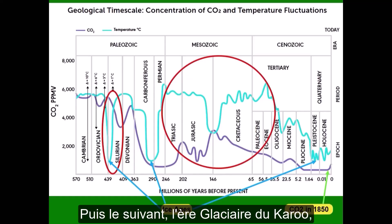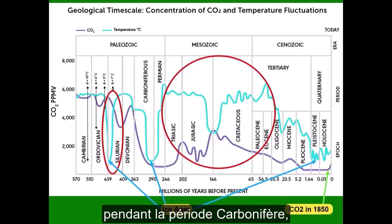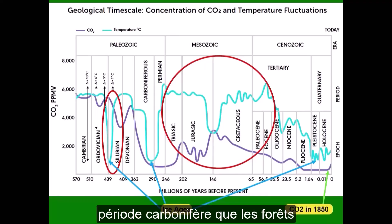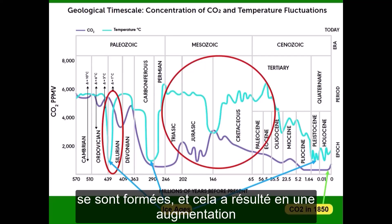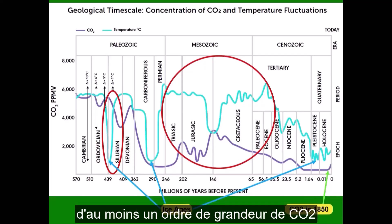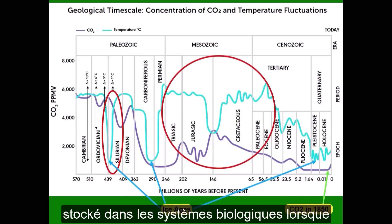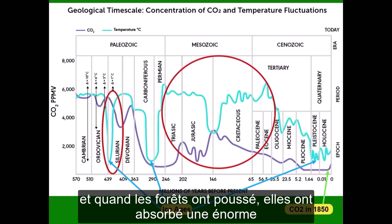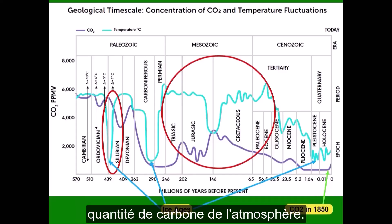Then the next one, the Karoo Ice Age, in the Carboniferous period coincided with a drop in CO2. But the Carboniferous period was when forests formed, and this resulted in at least an order of magnitude more carbon in biological systems. When the forests grew — before that, everything was flat on the ground or in the ocean — they sucked a huge amount of carbon out of the atmosphere.